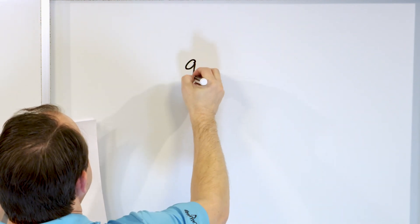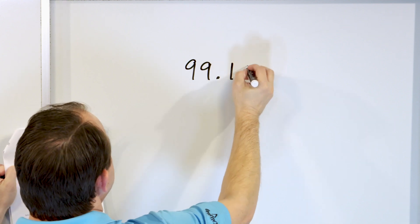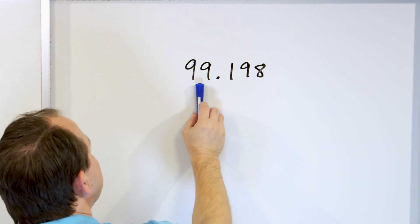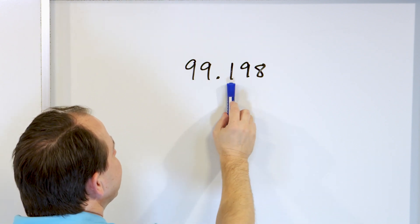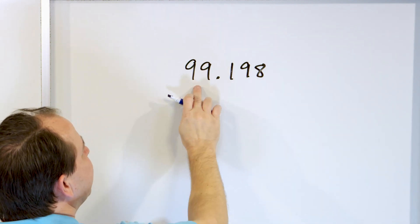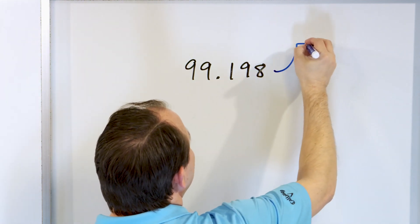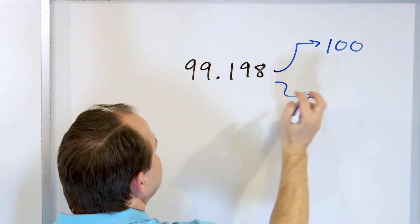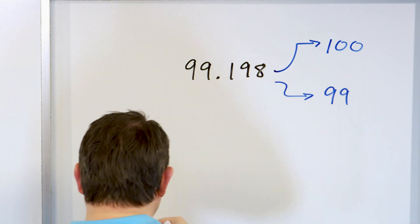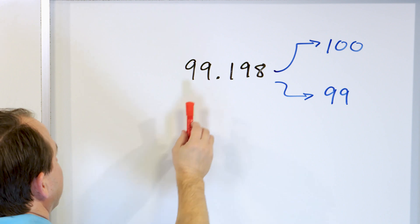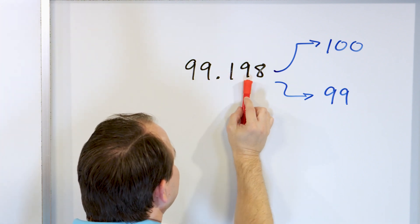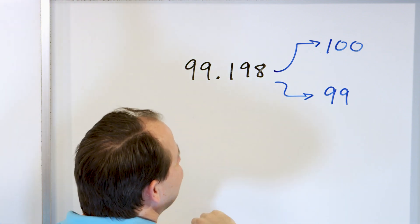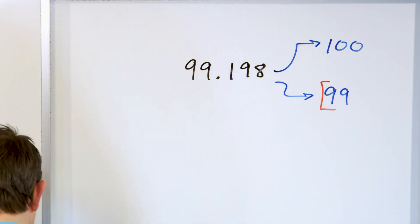Let's take a look at 99.198. The whole number is 99, and the fractional part tells us how close we are to the next whole number, 100. So we either round up to 100 or round down and stay at 99. We look at the next digit — the 1 in the tenths place. That's less than 5, so we round down and stay at 99.